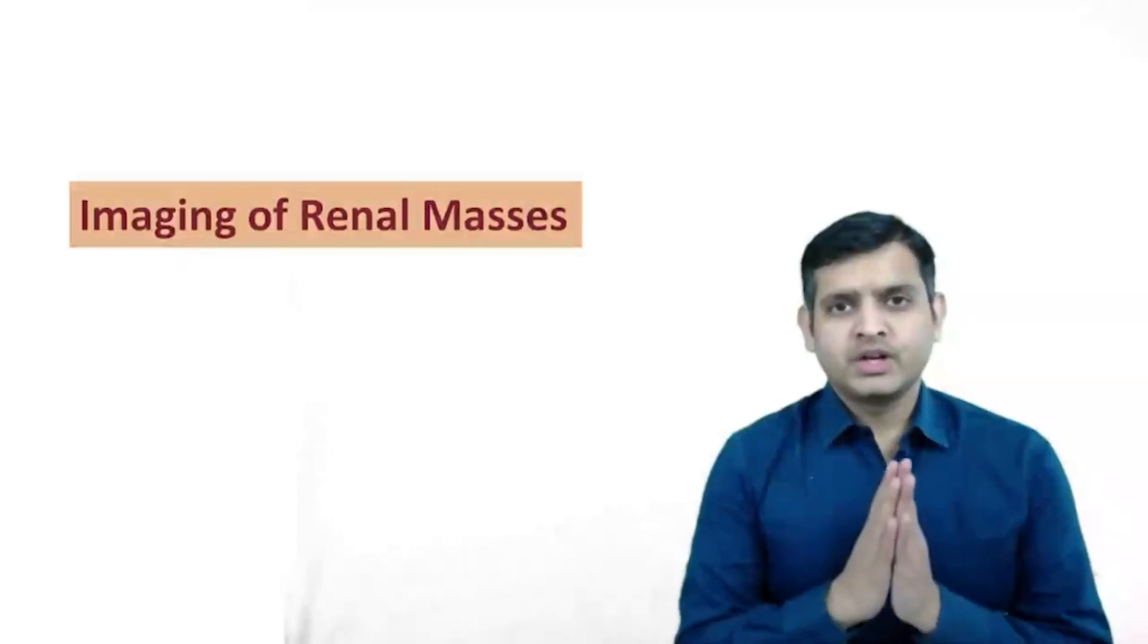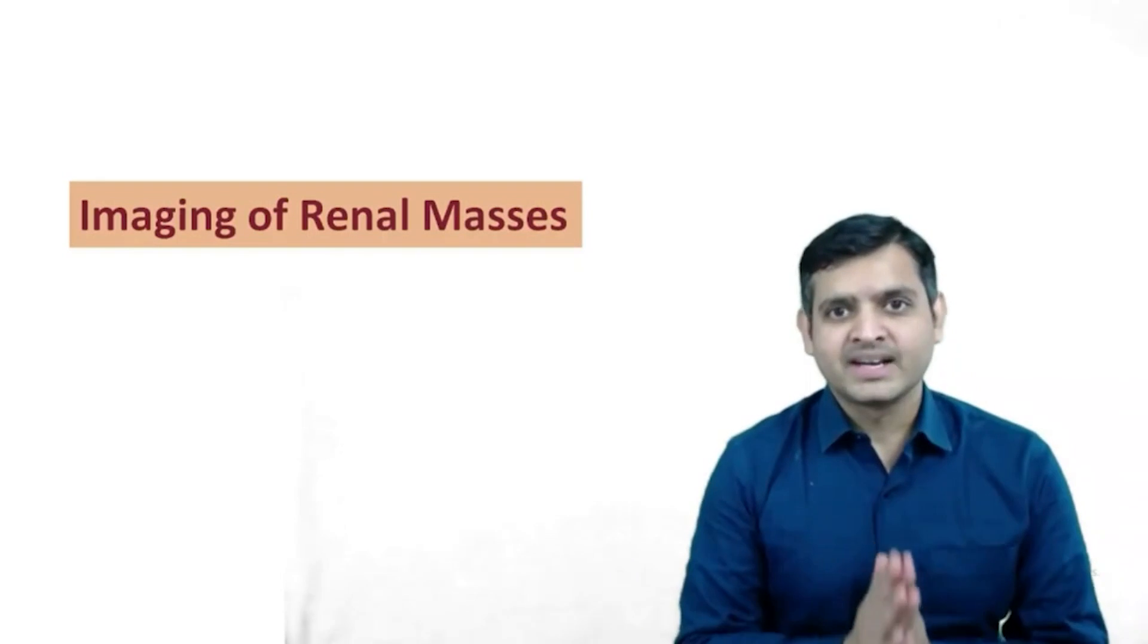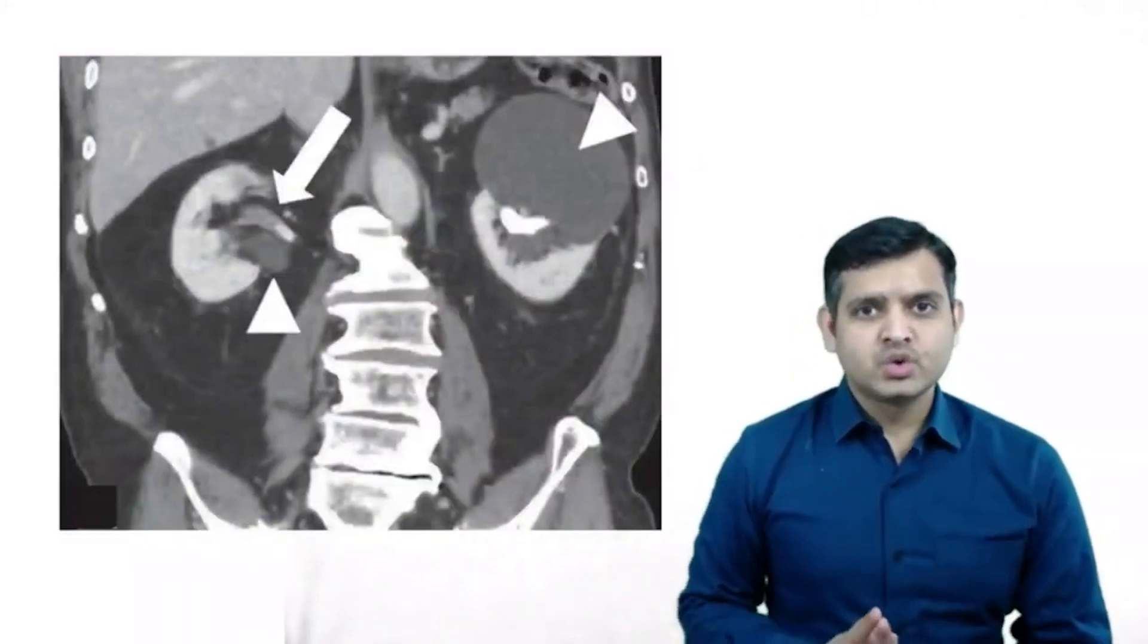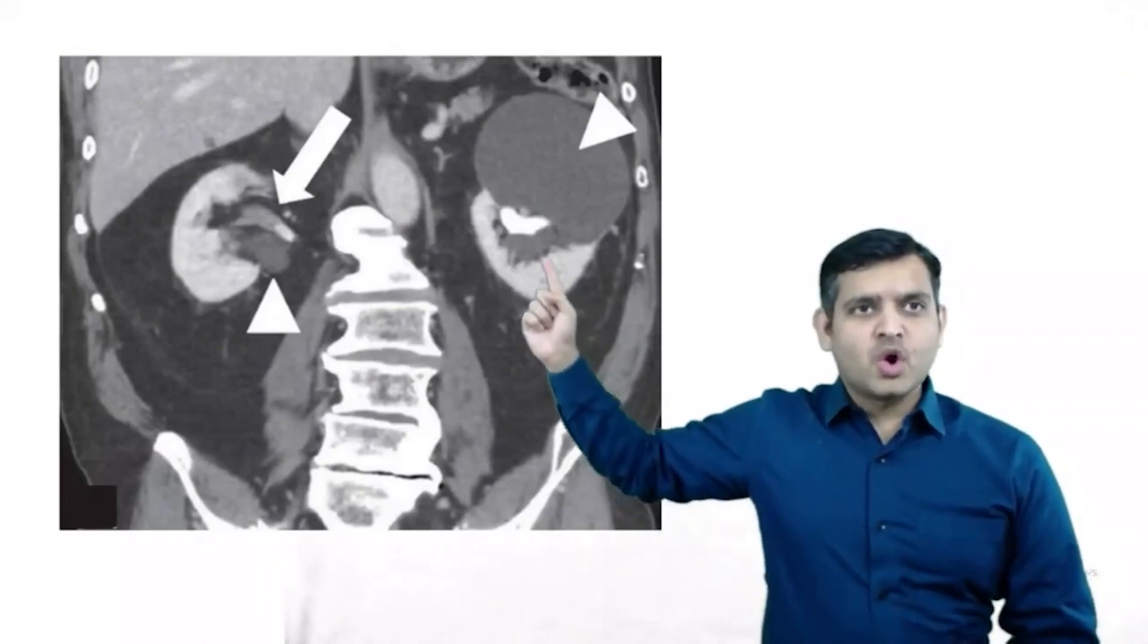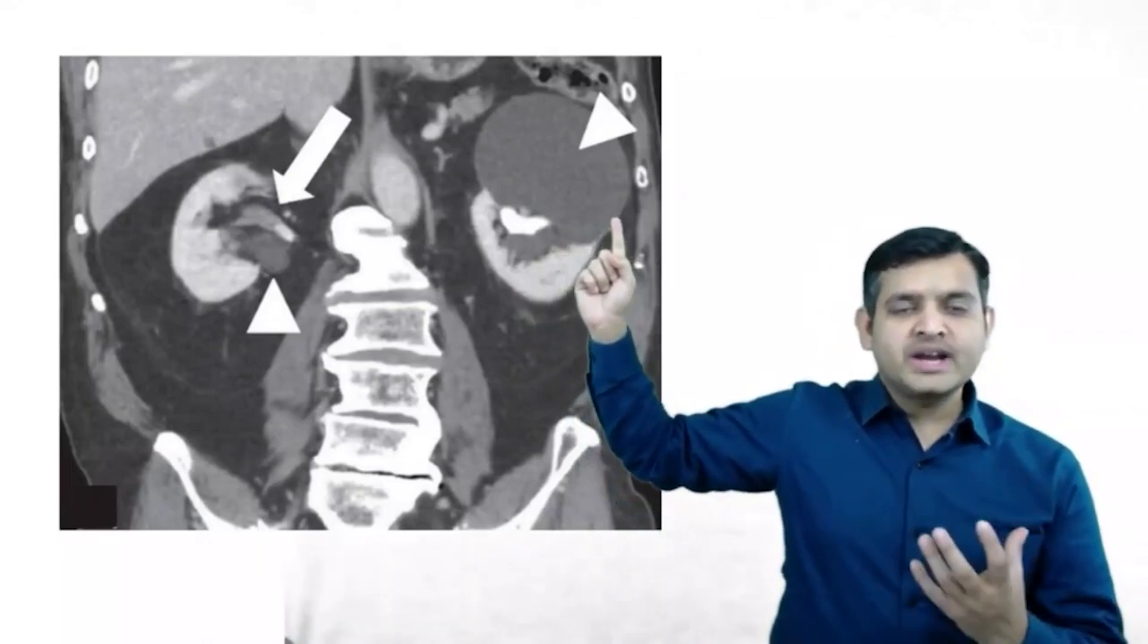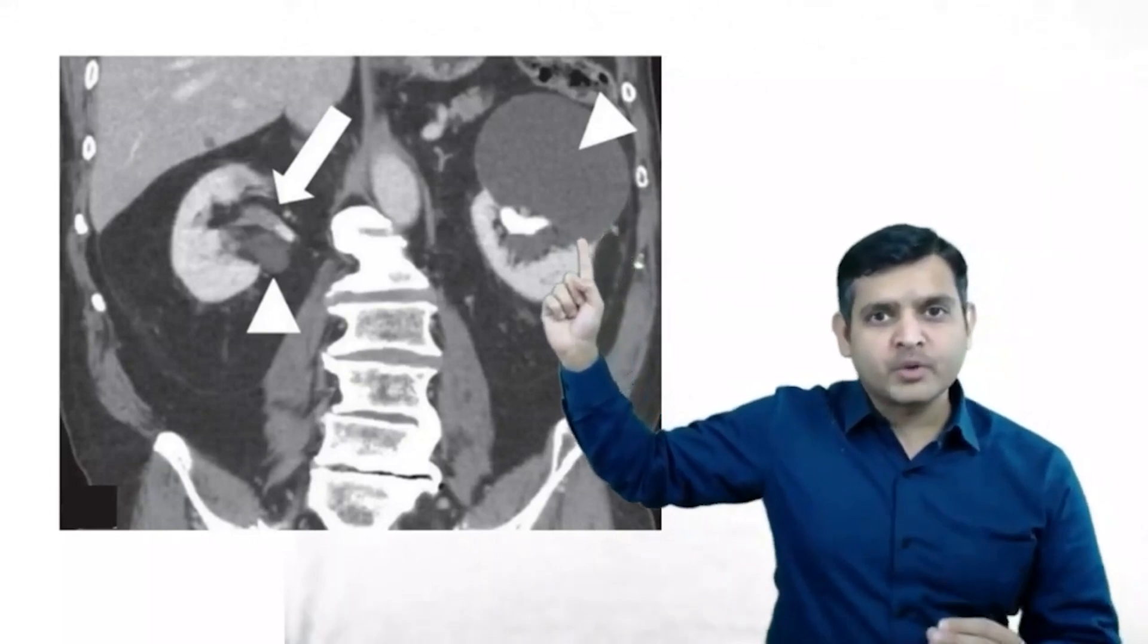In this video we will talk about imaging appearance of some of the common renal masses. If on a contrast-enhanced CT you see a uniform non-enhancing hypotense mass lesion, totally endophytic or partially exophytic without any soft tissue component, you are dealing with a simple renal cyst.